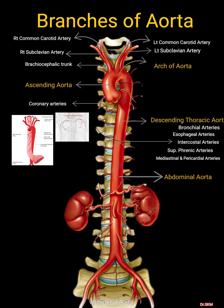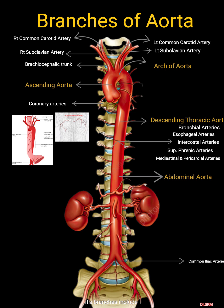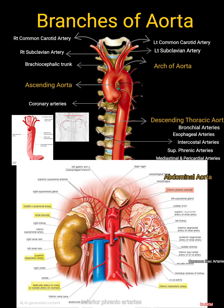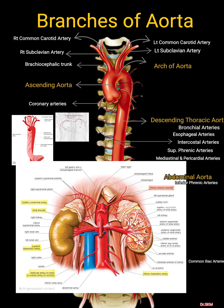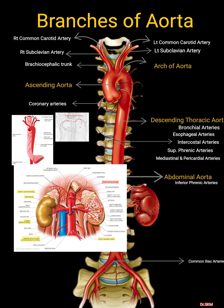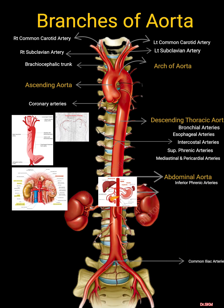The abdominal aorta begins at the level of the diaphragm and ends by splitting into the right and left common iliac arteries. Its branches include the inferior phrenic arteries to the underside of the diaphragm.